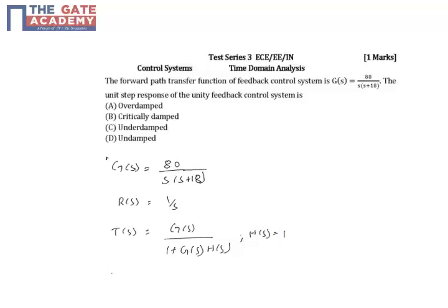So T(s) will be 80 by s squared plus 18s plus 80. This comes after simplification of this particular formula.